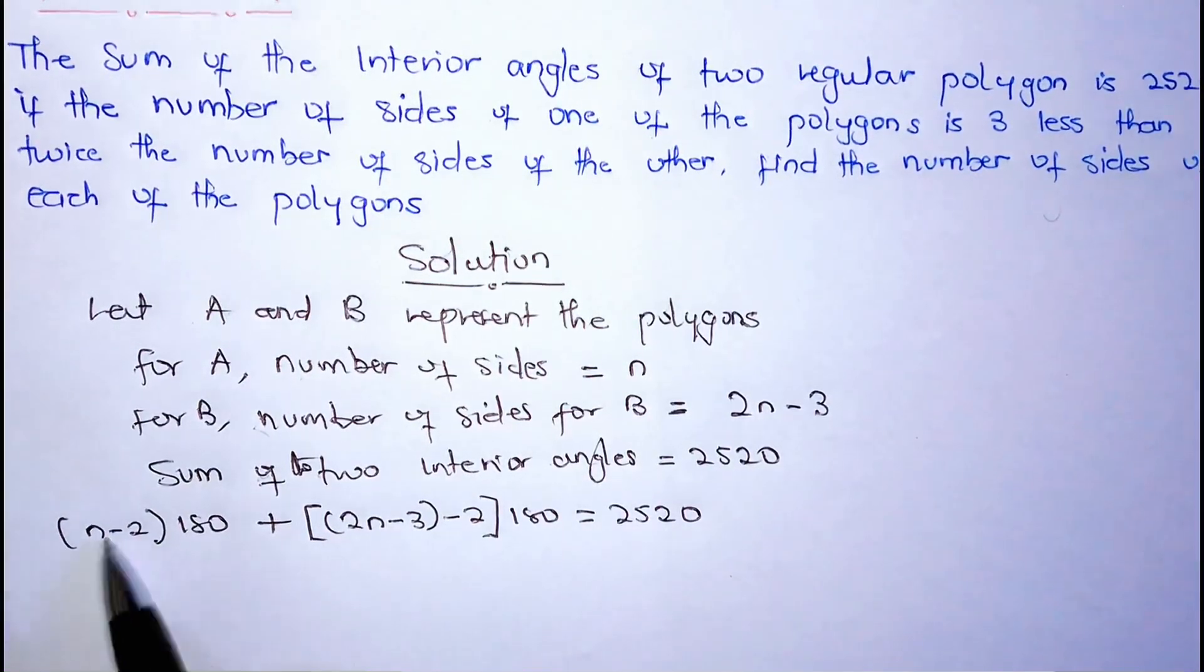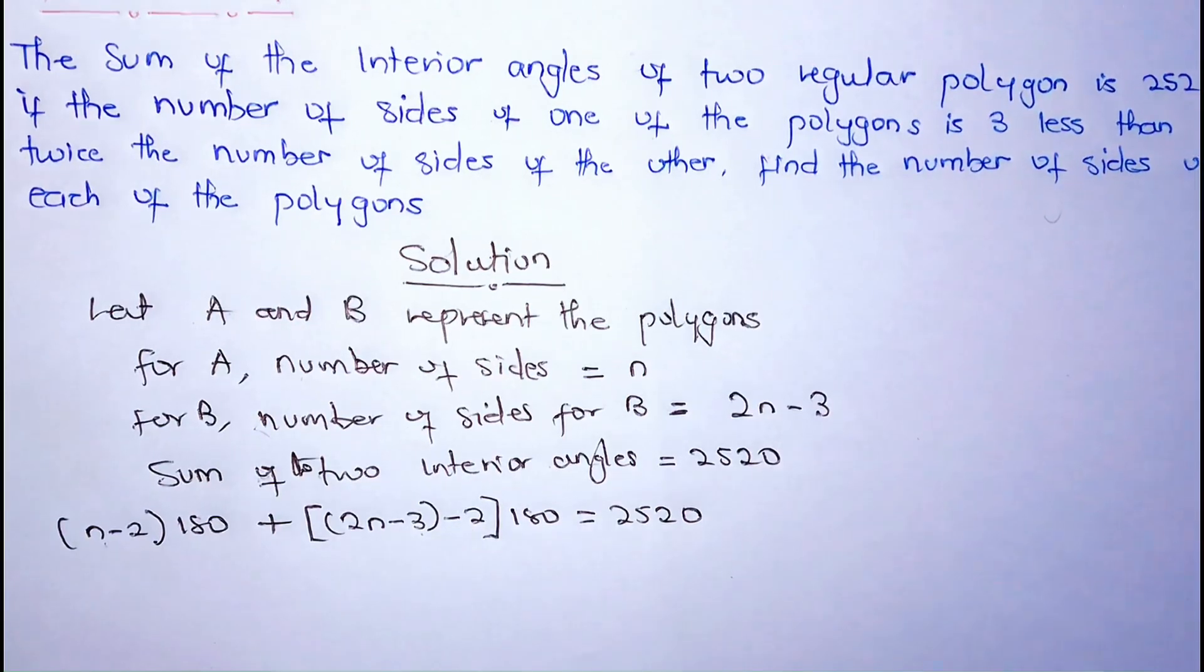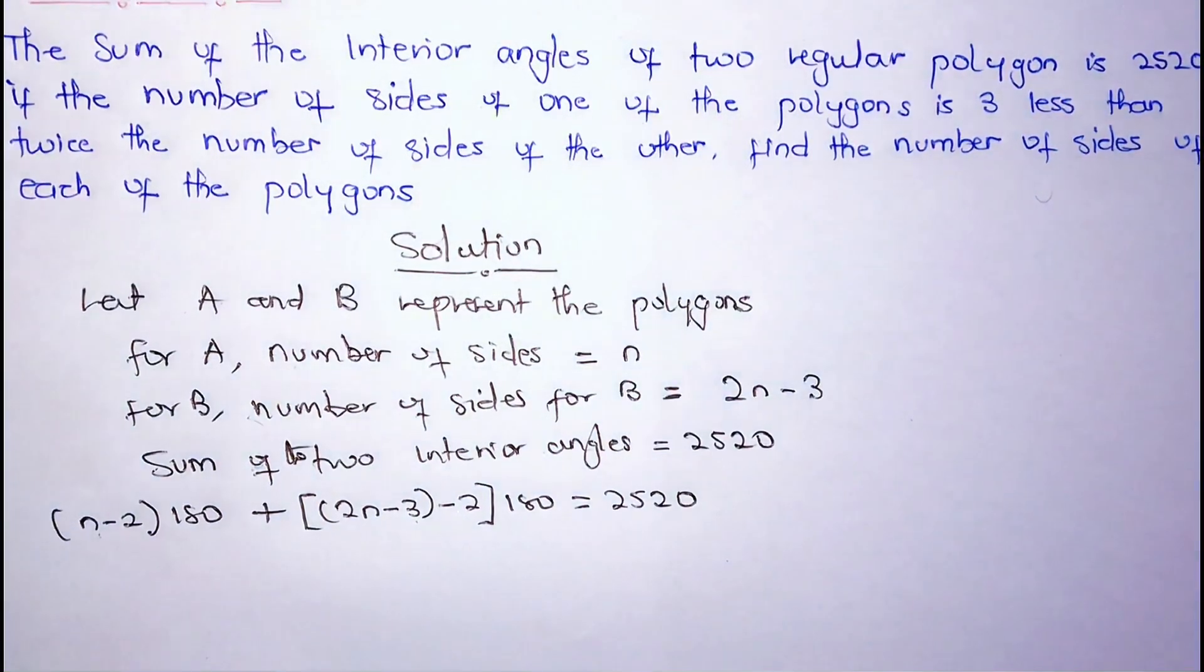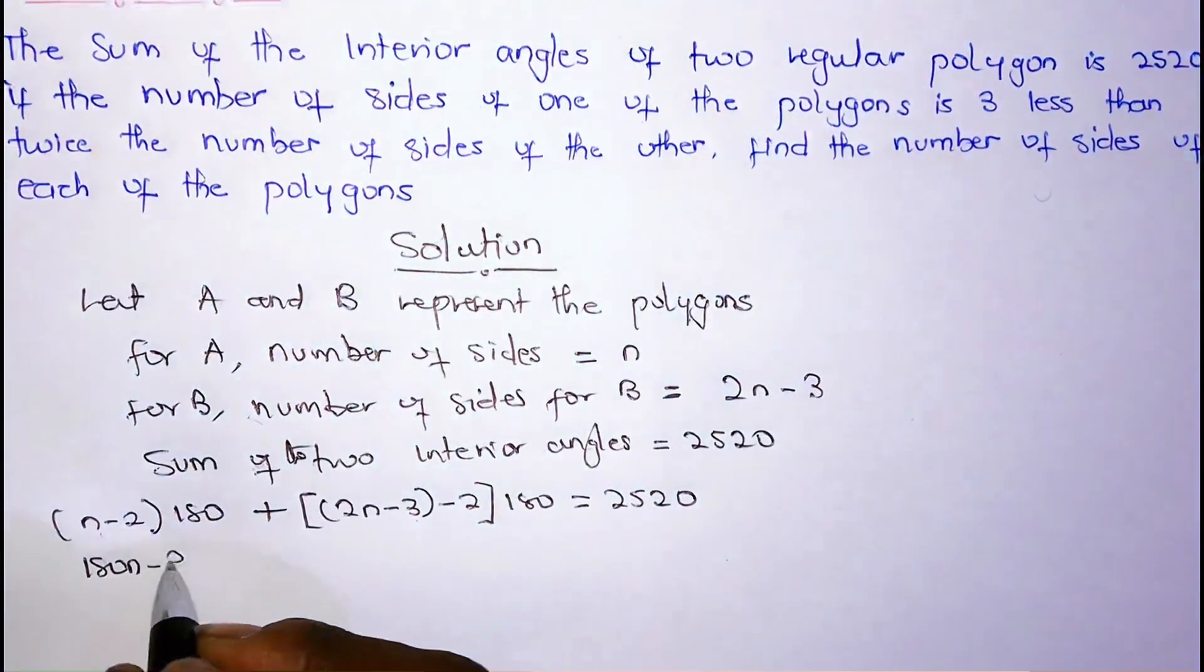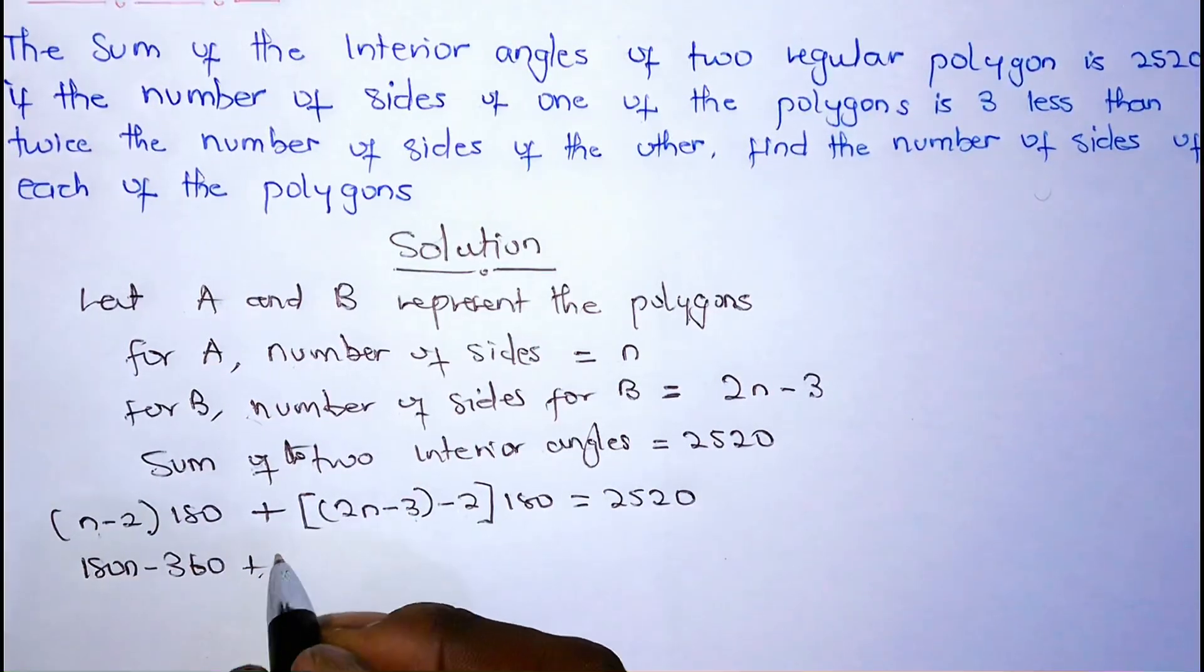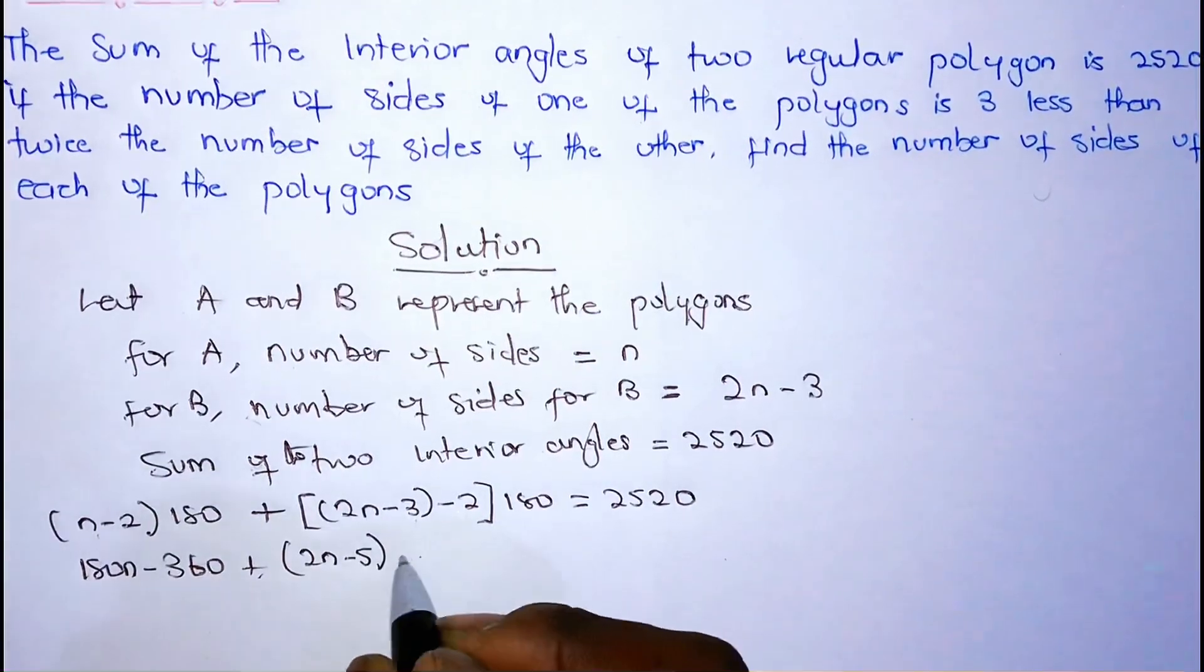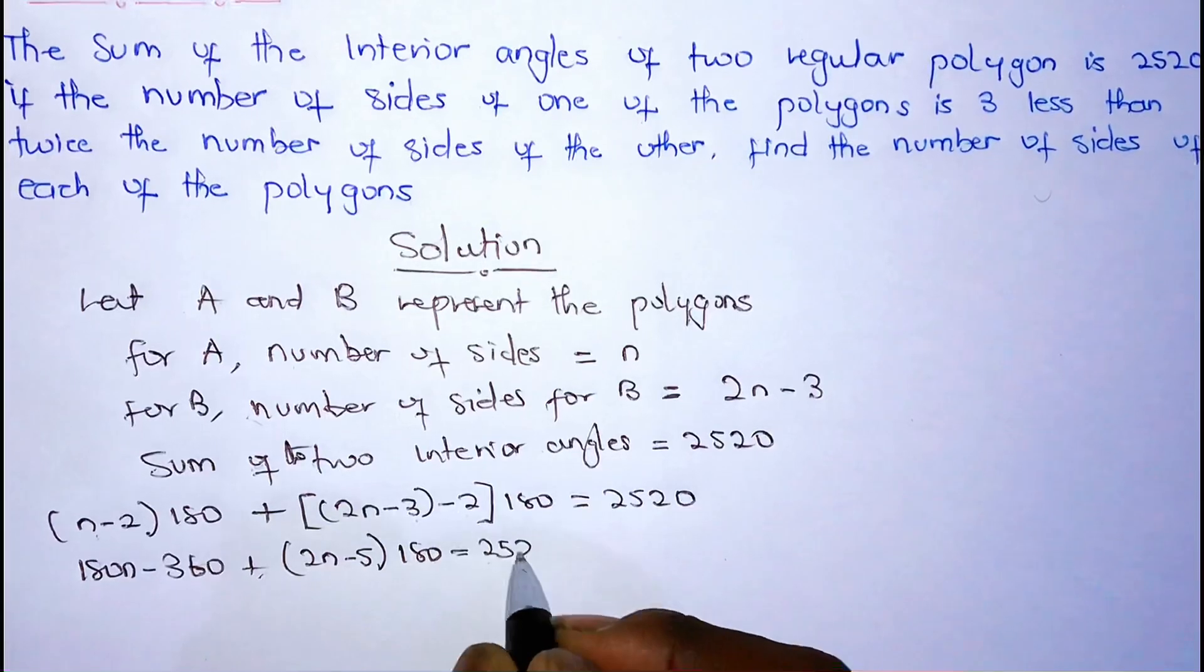N is, we have 2N minus 3 minus 2, multiplying 180. So this is going to give us 180N minus 360 plus, so we are going to get 2N minus 5 multiplying 180 should be equal to 2520.